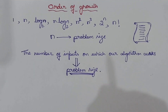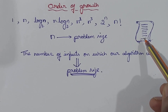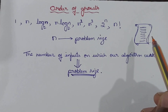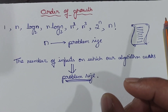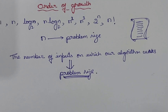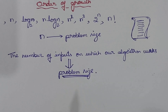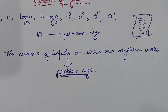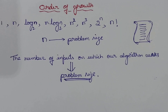Any program works very fast for a few inputs. That means if the problem size is very small, the program works very fast. If we increase the problem size, the time taken by our program also increases. For example, adding 2 numbers takes very little time. Adding 5 elements takes a little more time, and adding 10 numbers takes even more time.